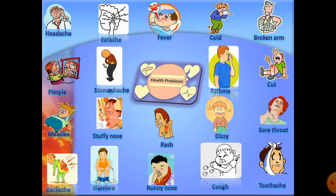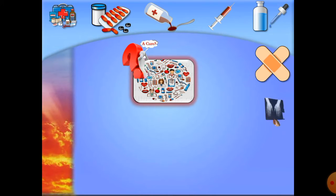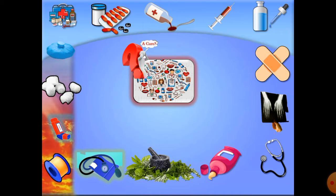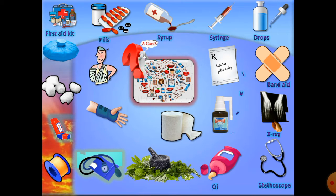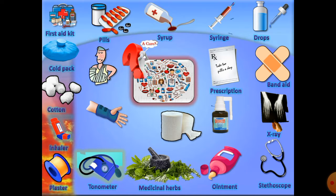We have others but we'll limit ourselves to these. When we talk about health problems, we should also talk about remedies and cures. We're going to name a few remedies used to treat illnesses: pills, syrup, syringe, drops, band-aid, X-ray, stethoscope, ointments, medicinal herbs, tonometer, plaster, inhaler, cotton, cold pack, splints, prescription — a doctor gives you a prescription after being examined — throat spray, and bandage.